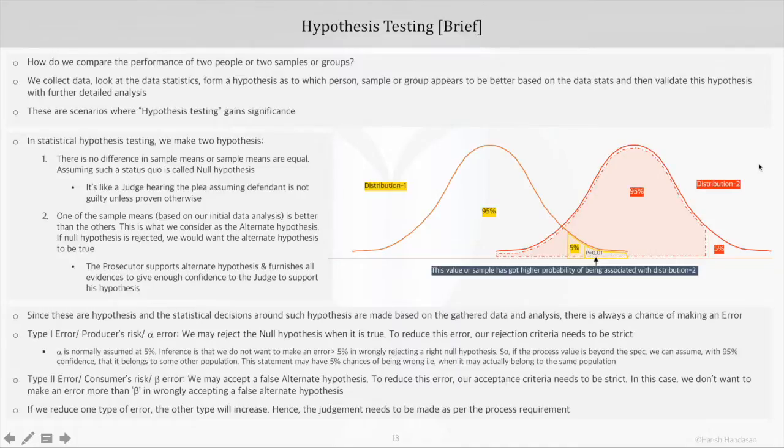Let's say actually the defendant was not guilty, but we end up prosecuting the person. So what we have done? We have committed Type 1 error, rejecting null hypothesis when it was true. And to avoid this mistake in future, we have to make our prosecution criteria very strict.